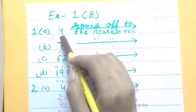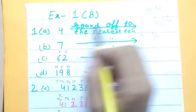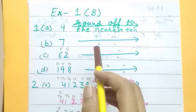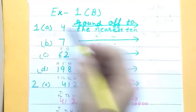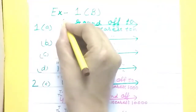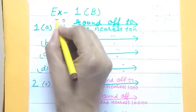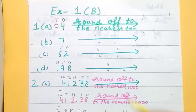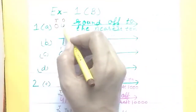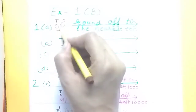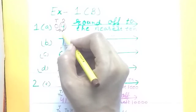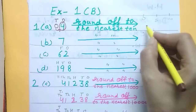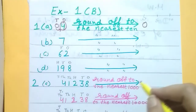Part a: the number is 4. Round off to the nearest ten. Write ones place — the digit is 4. There is no tens digit so write zero there. Just right of the tens place, circle the number four. It is less than five, so it will become zero. The answer is zero zero, meaning zero.